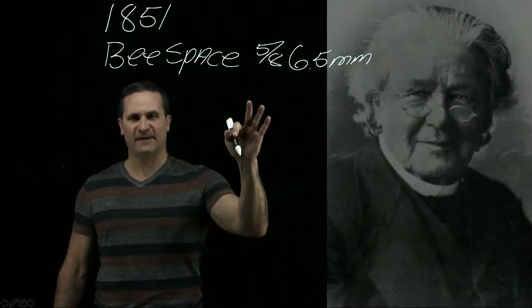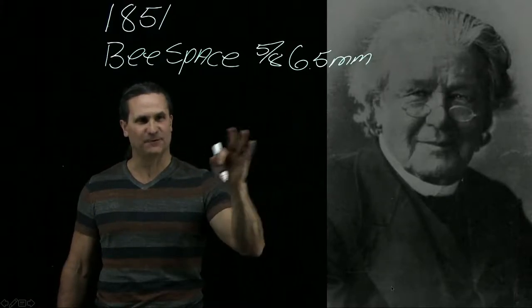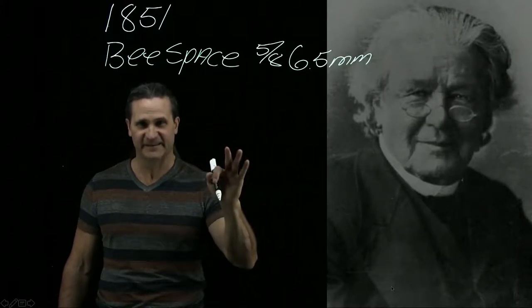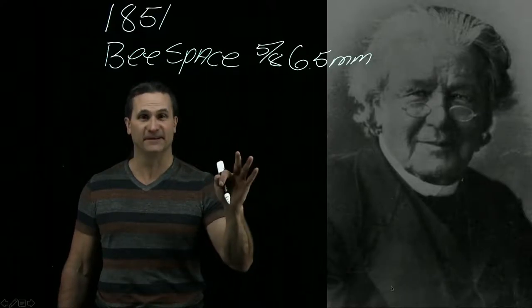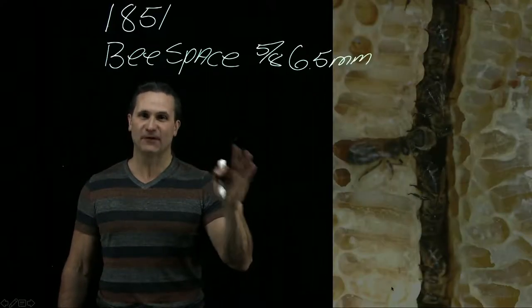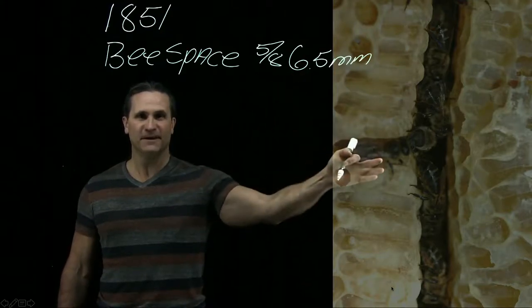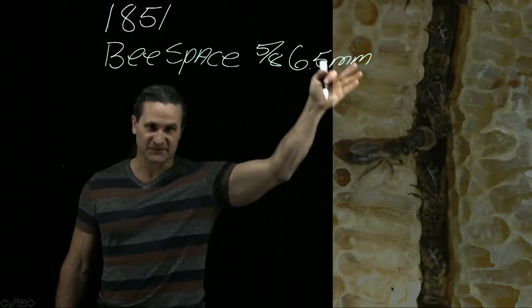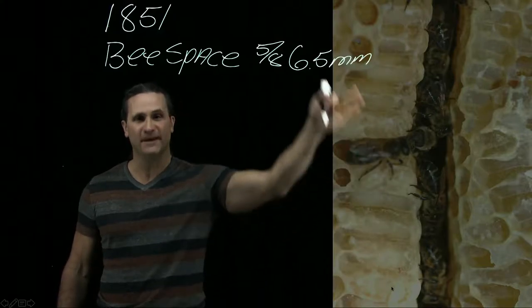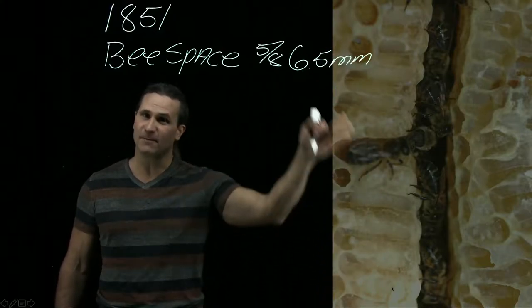If you leave a 5/8 inch or 6.5 millimeter gap between any part that is inside the hive, the bees will not fill it. Now if you space your frames at 5/8 inch or 6.5 millimeters, the bees leave a gap like you see here. That is space for them to move between their hive. It's very important to them.